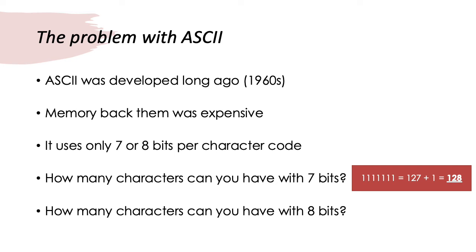Well, in 7 bits, the largest number that we could store would be 7 ones. Doing the maths, we know that 7 ones adds up to 127. It's 64 plus 32 plus 16 plus 8 plus 4 plus 2 plus 1. But don't forget, we've also got a character code 0. So, we can add 1 to that, and that gives us a total of 128 characters.